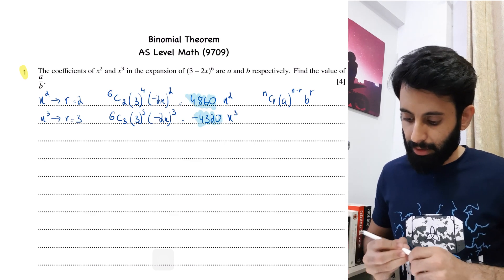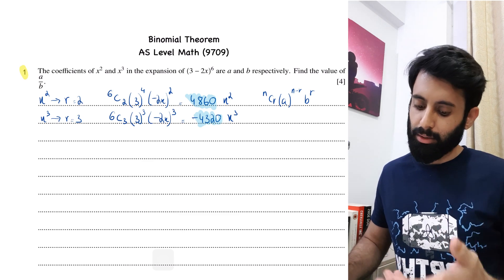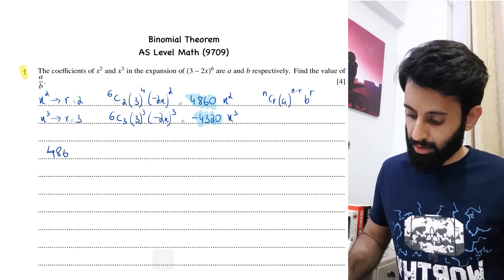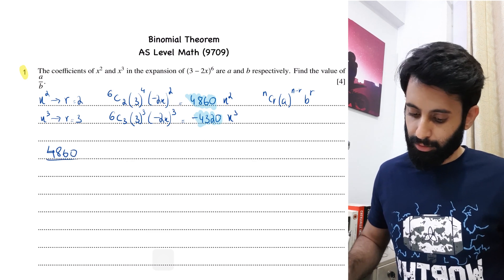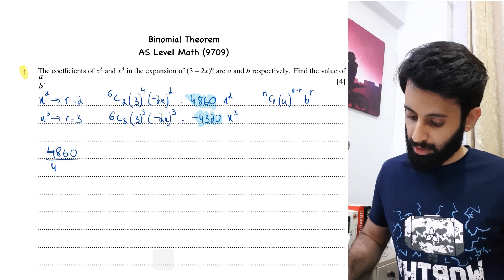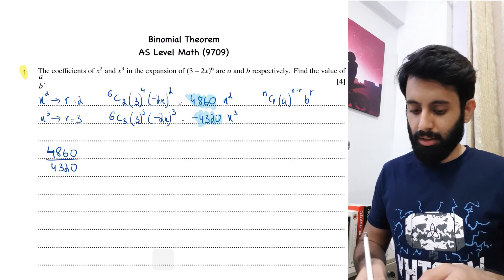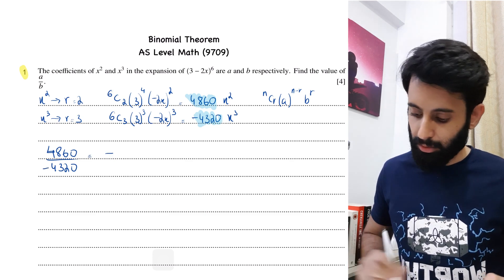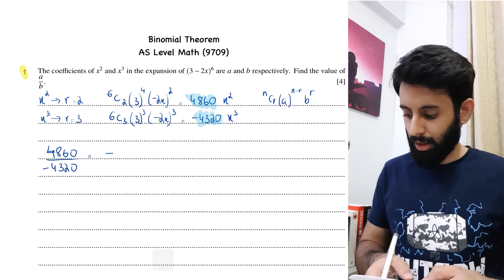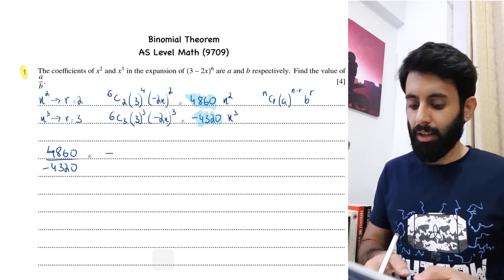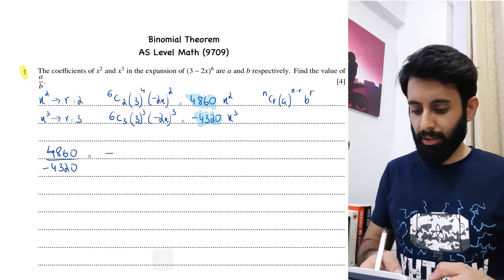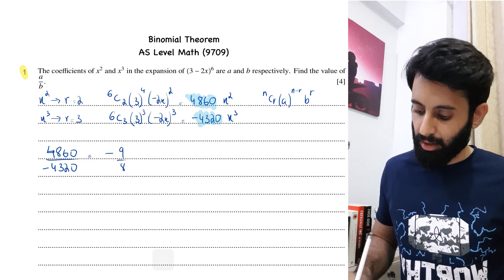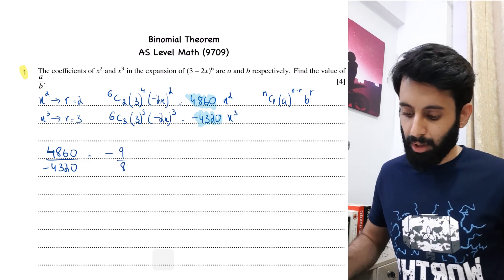Now we find a/b. a is the coefficient of x², which is 4860, divided by b the coefficient of x³, which is −4320. Don't forget the minus sign, so the overall value is negative. That gives us 4860 divided by −4320, which equals −9/8. This question is done — it's from May/June 2017 Paper 1 Variant 1.